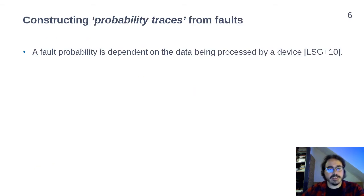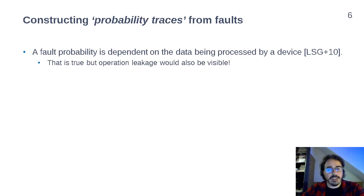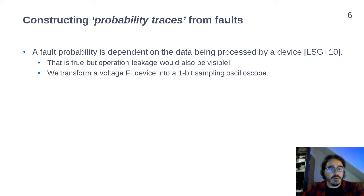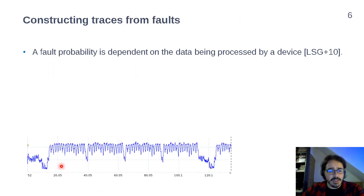How do we construct our probability traces from faults? Already more than 10 years ago it was noted that fault probability is dependent on the data being processed by a device. Additionally, operation leakage would also be visible — and it's even much stronger, because it means that different operations are being performed on the chip, so we expect that fault probability would also depend on different operations. What we do is transform our voltage fault injection device into a single-bit sampling oscilloscope, and from the single bits we construct our probability traces.